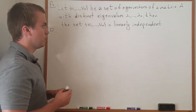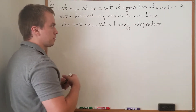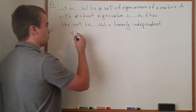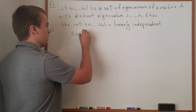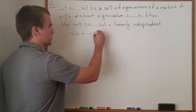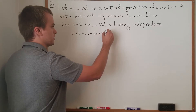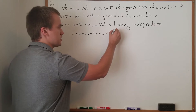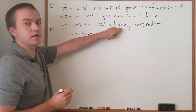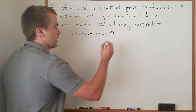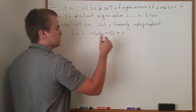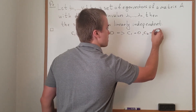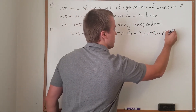So let's start this proof. Let's recall what linear independence is. We say that vectors v1 up to vn are linearly independent if, when we take the sum c1·v1 + ... + cn·vn = 0, it follows that all constants c1 through cn must be equal to zero.